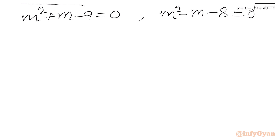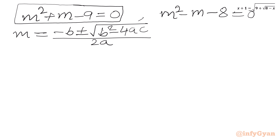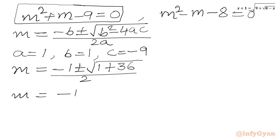Let's solve both quadratic equations using the quadratic formula: m equals (−b ± √(b²−4ac)) / 2a. For the first equation m²+m−9=0, a=1, b=1, c=−9. So m equals (−1 ± √(1+36)) / 2, giving m equals (−1 ± √37) / 2.